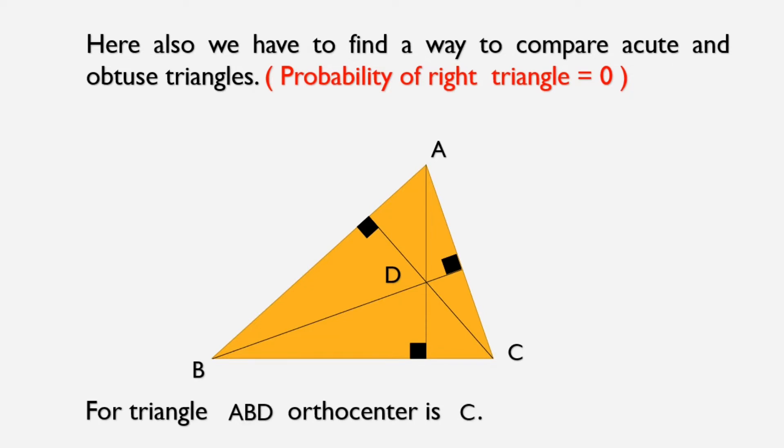But what will be the orthocenter for triangle ABD? It is C. And similarly for triangle ACD orthocenter is B and for triangle BCD orthocenter is A. So here we got 4 points. If we join any 3 of them to form a triangle then the 4th remaining point will be the orthocenter of that triangle.